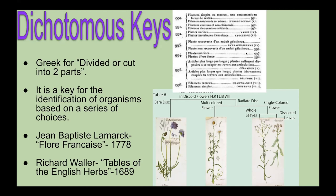There is also Richard Waller, an Englishman who created a pictorial dichotomous key of herbs, almost 100 years before Lamarck's textual version. So two people are credited with creating the dichotomous key. A dichotomous key is a tool used to identify an unknown organism, and identifying organisms helps scientists understand an area's biodiversity and document changes.